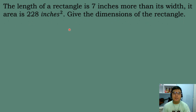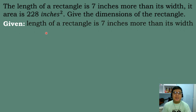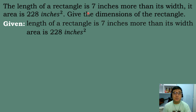Let's solve our first problem. The length of a rectangle is 7 inches more than its width. Its area is equal to 228 square inches. Give the dimensions of the rectangle. So we are looking for the length and the width of the rectangle. The given are: the length is 7 inches more than its width, and the area is equal to 228 square inches.